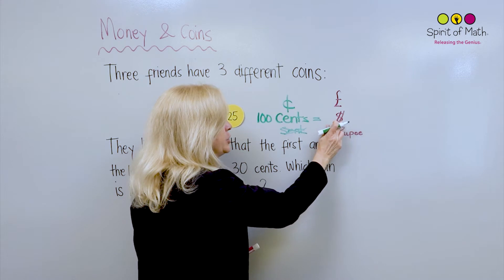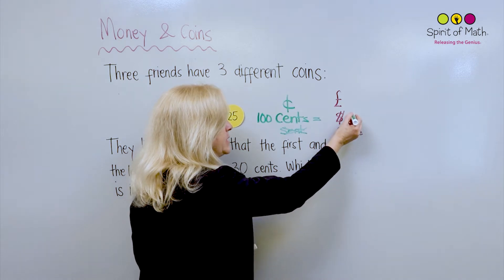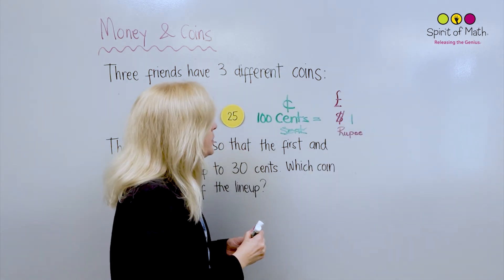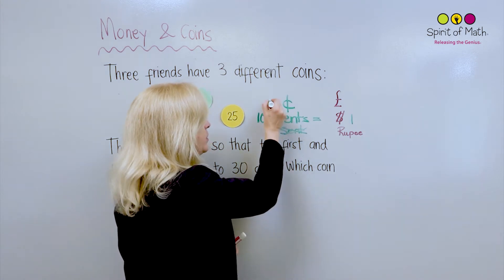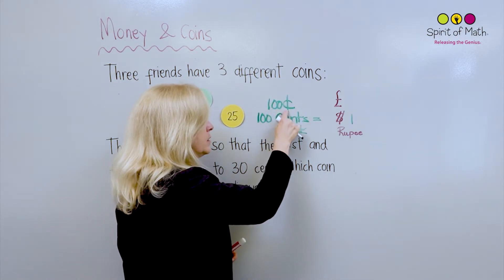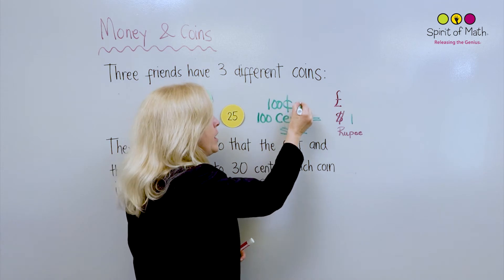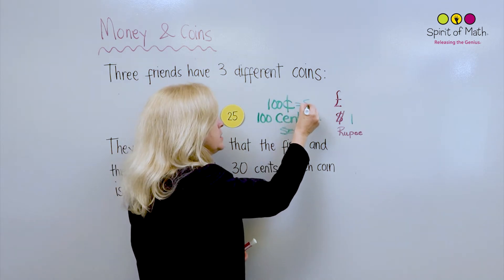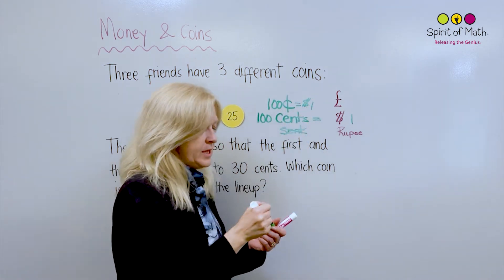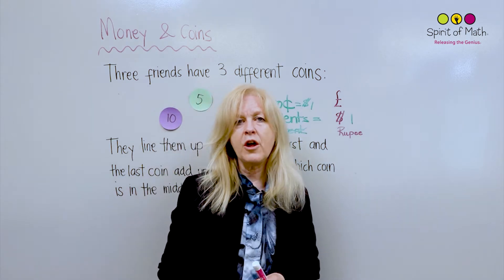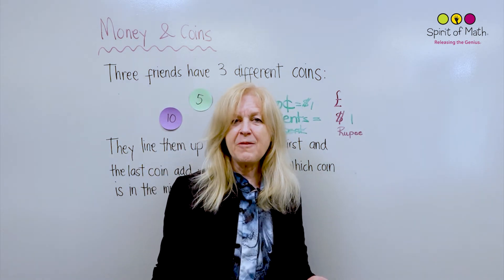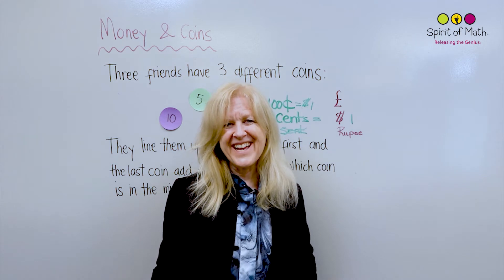Our dollar symbol is here and it equals one dollar. Now when we write our cents, we write the cent symbol after the number, and when we write our dollar symbol it is before the number. In some parts of the world they write the dollar symbol afterwards, and that's a French way of writing it.